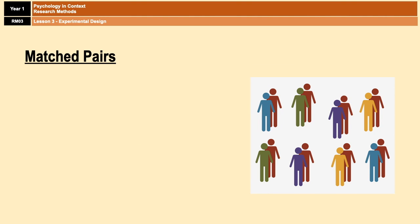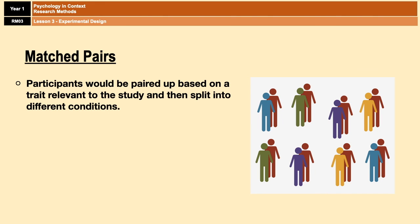The final design is matched pairs. In this design, participants are paired up based on a particular trait relevant to the study, and are then split into separate groups. For example, if our study was a memory study, participants may be paired on IQ, because the researcher may think higher IQ is linked to better memory. Everyone takes an IQ test, then the highest and second-highest IQ would be paired together and split into two separate conditions, and so on.